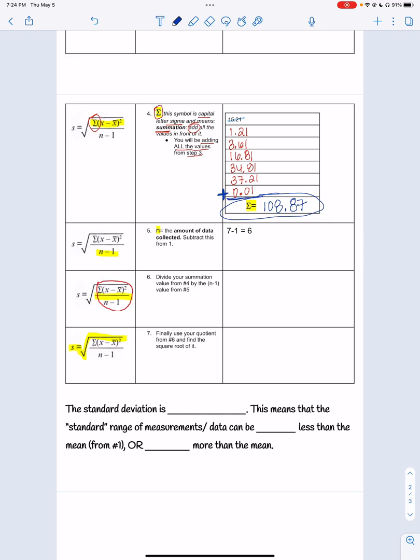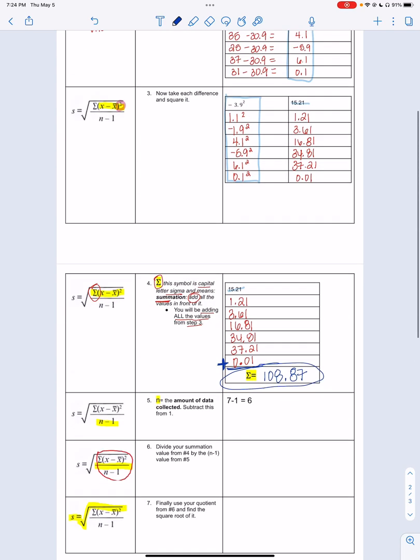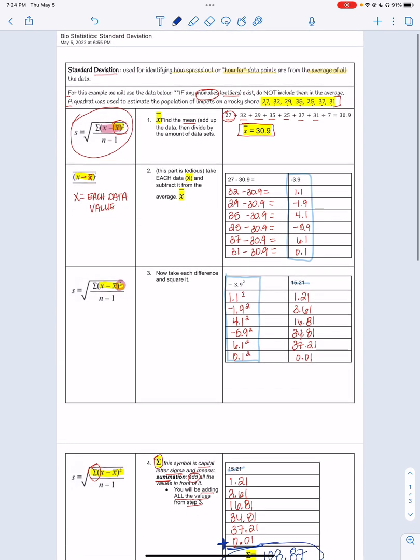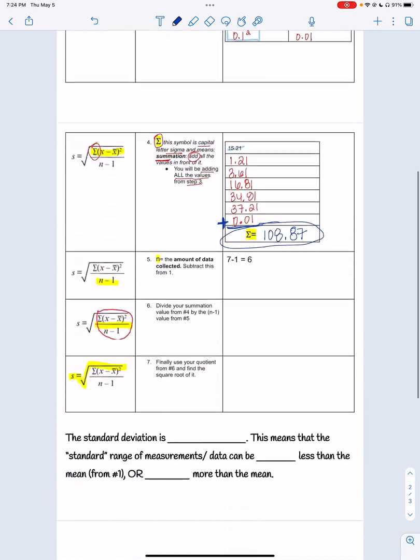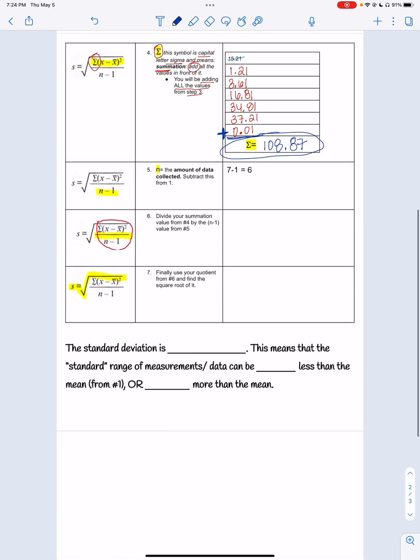Now we'll just hang on to that value for now. n minus 1. And again, you'll be told in the test what n means. n is the amount of data you collected, and we collected 7. That's what we divided by in the first step to find the mean. And we have 7 data sets there. So you're going to do 7 minus 1 equals 6. Easy.